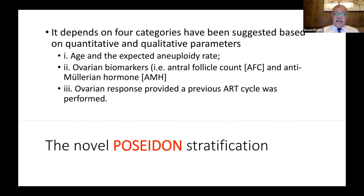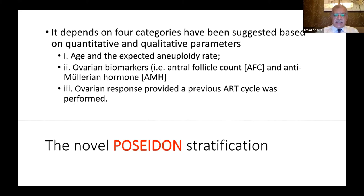The Poseidon stratification depends on four categories based on quantitative and qualitative parameters: first, age and the expected aneuploidy rate; second, ovarian biomarkers — AFC and AMH; and third, the ovarian response from a previous ART cycle, if available.